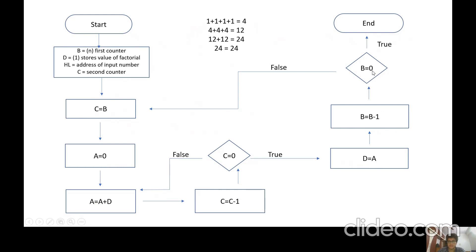The decision box checks whether B is equal to zero. If true, the process ends; if not, it goes back to the block where C is set equal to B. Since B is now three, C will be equal to three, and this loop will be executed three times. D will be added three times to A. Since D was set to four in the last case, four is added three times to the initialized zero value of A, giving us 12.